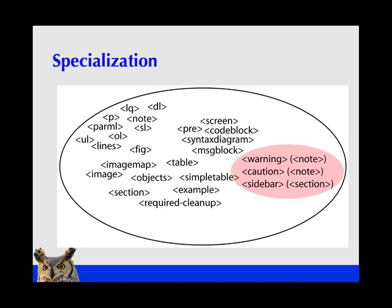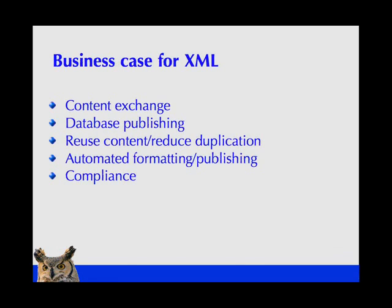And finally, we have specialization. What you do with specialization is you create the warning, caution, and the sidebar. But instead of creating them outside the DITA content, you create them as instances or specializations of an existing DITA element. So a warning is a specialization of note, a caution is a specialization of note, and a sidebar could be a specialization of section.